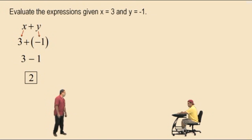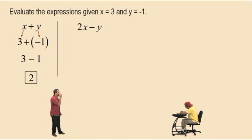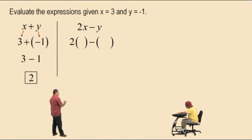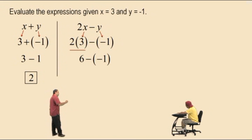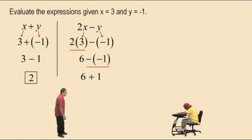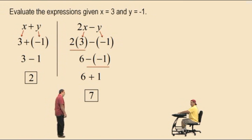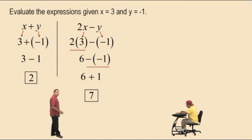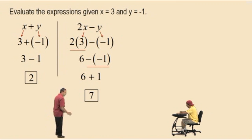Let's do another one: 2x subtract y. Remember, 2x means 2 times x. Replace the x with 3 and the y with negative 1. Do the multiplication first: 2 times 3 is 6. Now we have 6 subtract a negative 1. What happens when you subtract a negative number, Charlie? Add the opposite. So it becomes 6 plus 1. And 6 plus 1 is 7. That's why it's important to know your pre-algebra skills — adding and subtracting negative numbers.